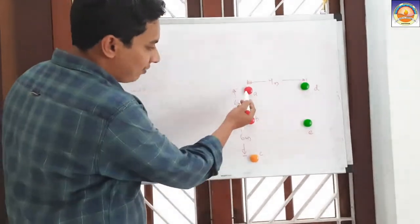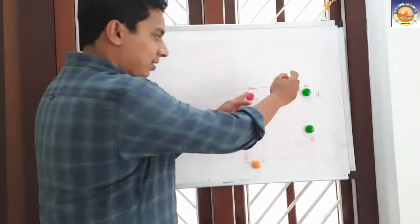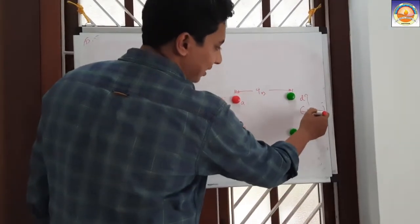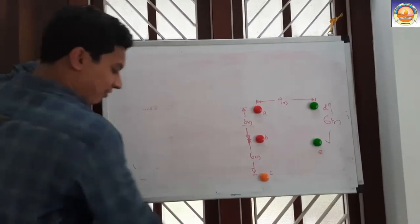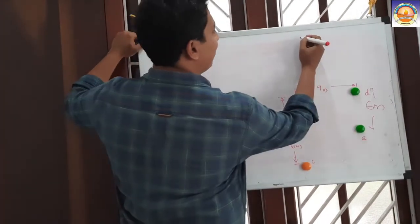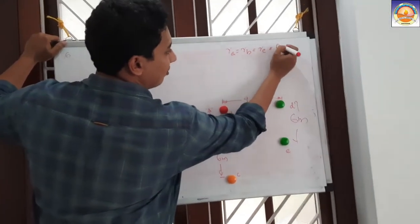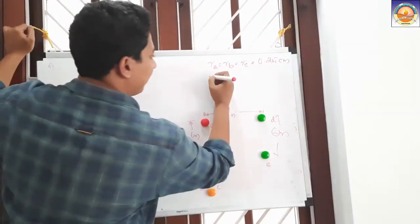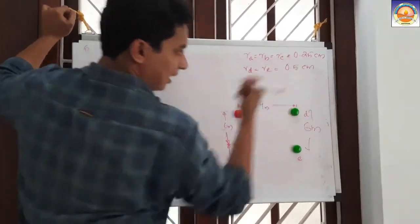The distance between each of the conductors in the first circuit is 6 m. Between the two circuit conductors, you have about 9 m distance, and the second circuit conductors are also placed at 6 m distance. So R_A = R_B = R_C = 0.25 cm, and R_D = R_E = 0.5 cm.